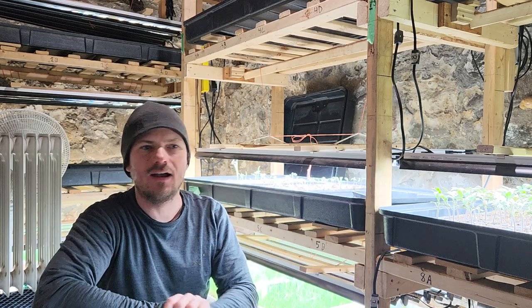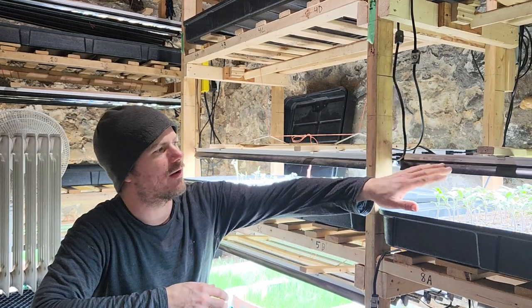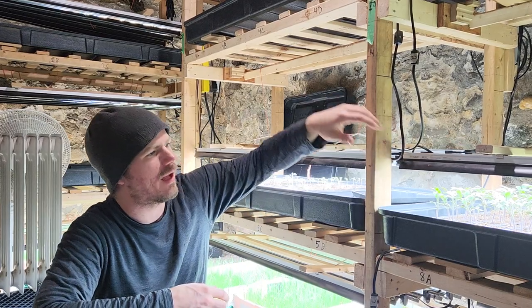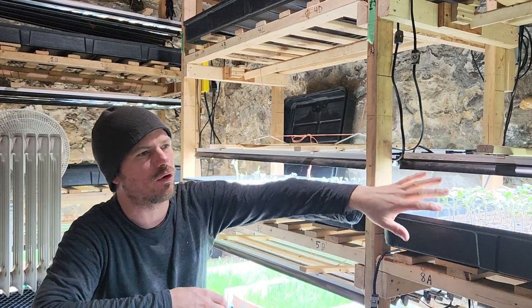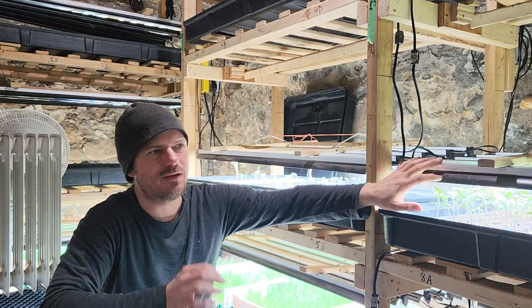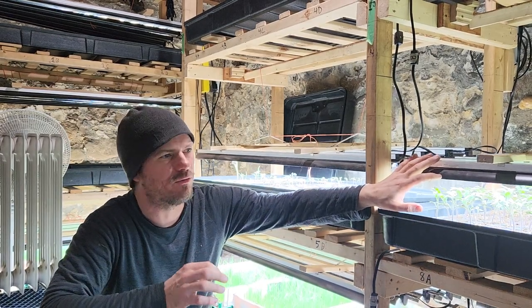Speaking of lights, these are little T five light sticks, sunblasters I think they're called. I've got five of them per shelf and each shelf is two feet by four feet. Five is a little bit overkill. You could definitely get away with four, but in my case, I just had to go with five.